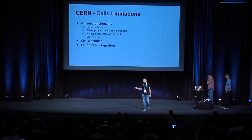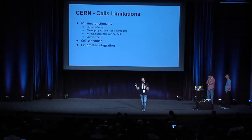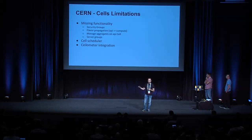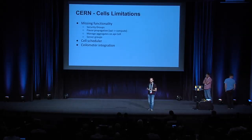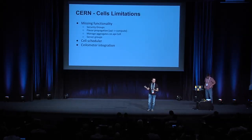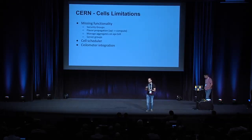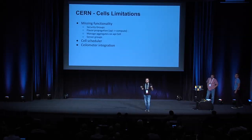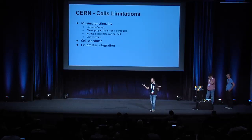Another missing feature is flavors. As a private cloud, projects have special flavors. Nova allows you to create a flavor and dedicate it to a project. However, if you use the Nova API, you're only interacting with the API cell. The flavor is not propagated to the children cells that the scheduler uses to spawn the instance. You could deploy Nova API in the children cells, but the flavor ID there will be different from the top cell — they won't match, and you can create a big mess. What we do now is sync the different databases manually.